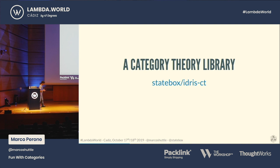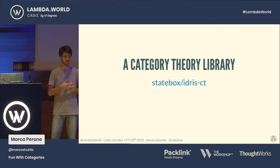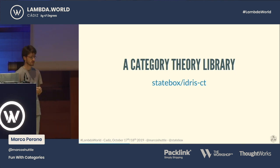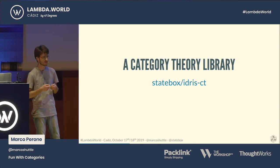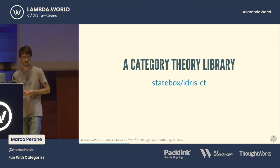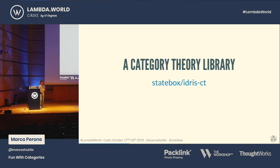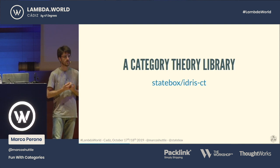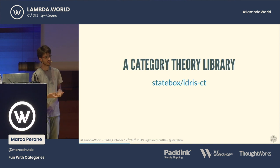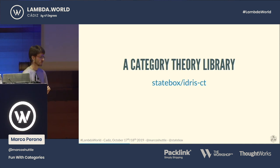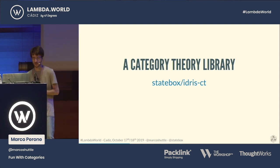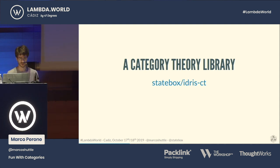So if you want to use category theory in all these domains, what you want to do is not only use functional programming — which uses terms and concepts from category theory — but you actually want to use category theory to model your domain, talking about categories, functors, and natural transformations. And if you want to do that practically, you need some kind of library in your code base which deals with all these concepts. That's exactly what we decided to do when we started coding up Statebox, and we created this library called IdrisCT, which is completely open source — you can check it out on GitHub.